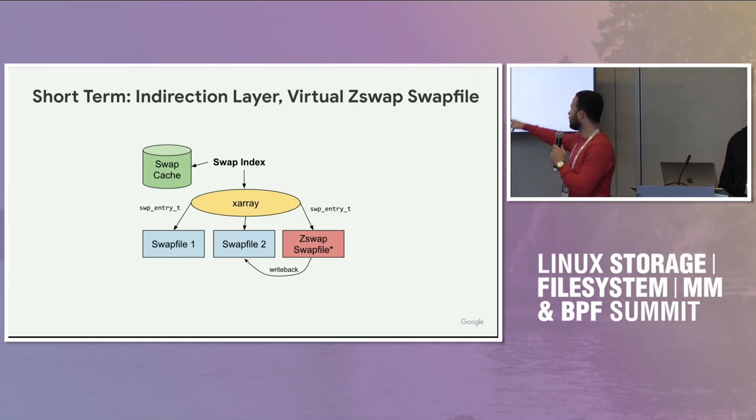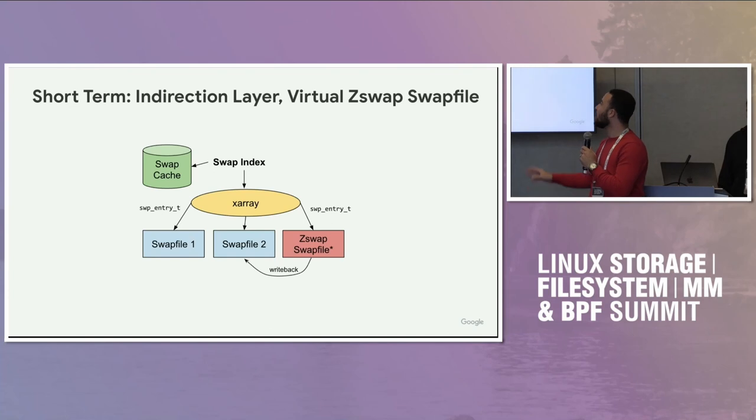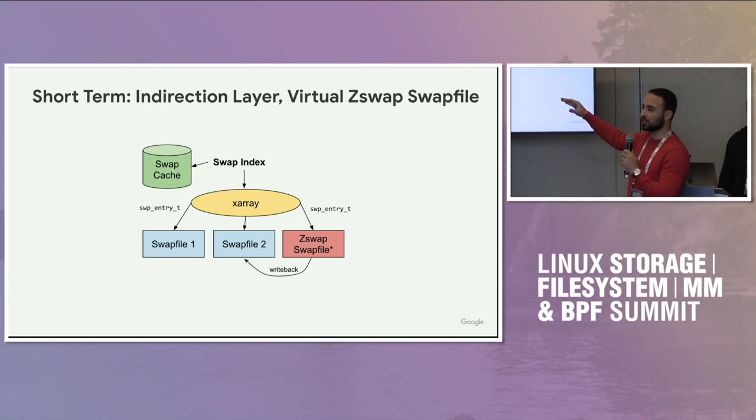We can use what I would call a virtual swap file for ZSwap, which basically would be swap infrastructure used to keep the implementation as close to today as possible to represent ZSwap. Then writeback would be moved outside of ZSwap, which is already an ongoing effort, to be just moving entries from one swap file to another. So this is basically just the proposed short-term solution.